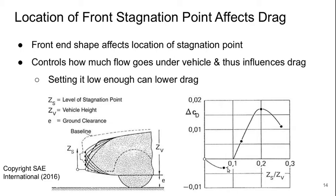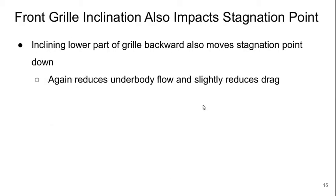negative contribution, and then as we start pulling it up we can get a drag reduction, but if we go too high we actually get extra drag. The inclination of the front grill also impacts the stagnation point location. If we incline the lower part of the grill backward, that helps move the stagnation point down, which reduces the amount of underbody flow and therefore slightly reduces the drag.